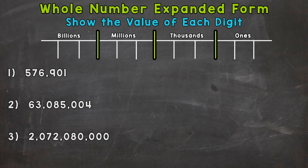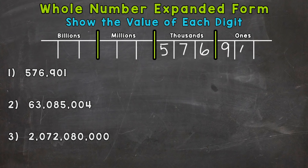I have a place value chart at the top of the screen. We're going to use that for number one. A place value chart can be very helpful when first starting out — it helps break the numbers down and see exactly where each digit is. But your ultimate goal is to be able to do expanded form without a place value chart. So let's jump into number one where we have 576,901. I'm going to write it up here in our chart. The sections — ones, thousands, millions, billions — go on forever, but we just go up to the billions in this video. Those sections separated by commas are called periods.